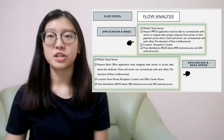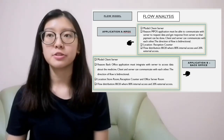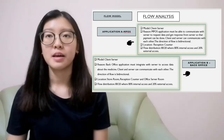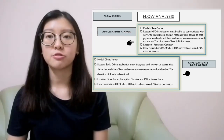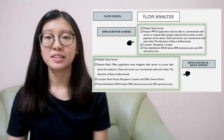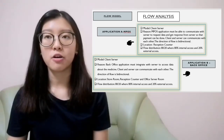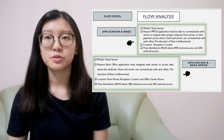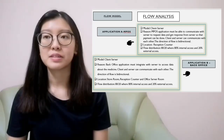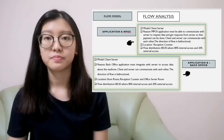Application B is Backoffice, and its model is also client-server. The reason is because the Backoffice application must integrate with the server to access data about medicine. Client and server communicate bi-directionally. The locations for Backoffice are the storeroom, reception counter, and office server room. Its flow distribution is 80/20 — 80% internal and 20% external access, same as Ampulse.